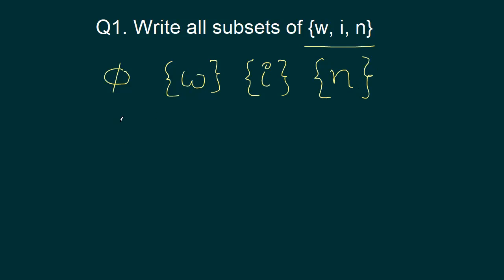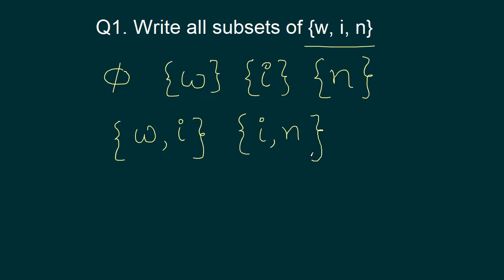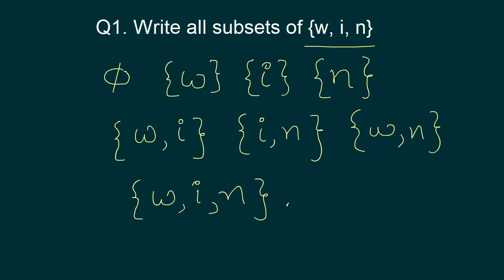We can also write subsets containing two elements: {W, I}, {I, N}, and {W, N}. And don't forget the original set {W, I, N} itself is also a subset. So how many subsets did we get? 1, 2, 3, 4, 5, 6, 7, 8. There are 8 subsets of this given set.